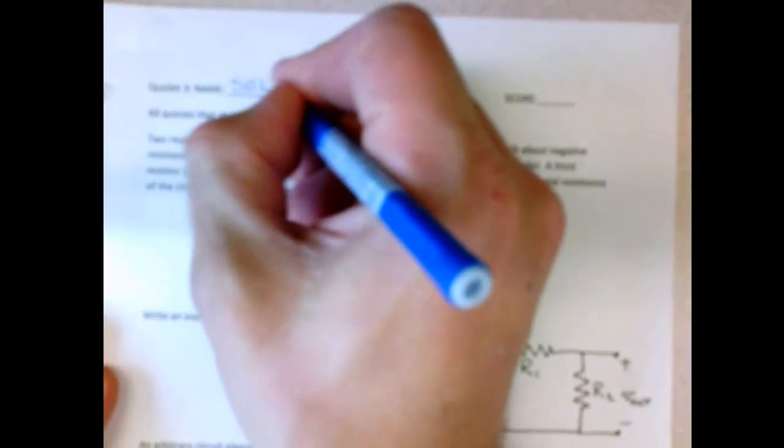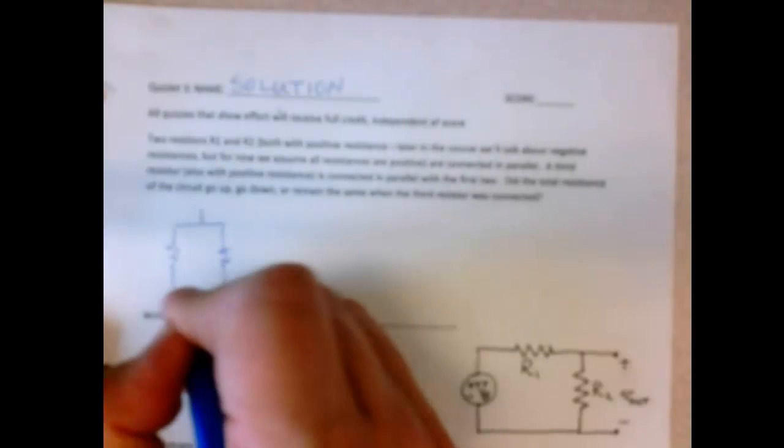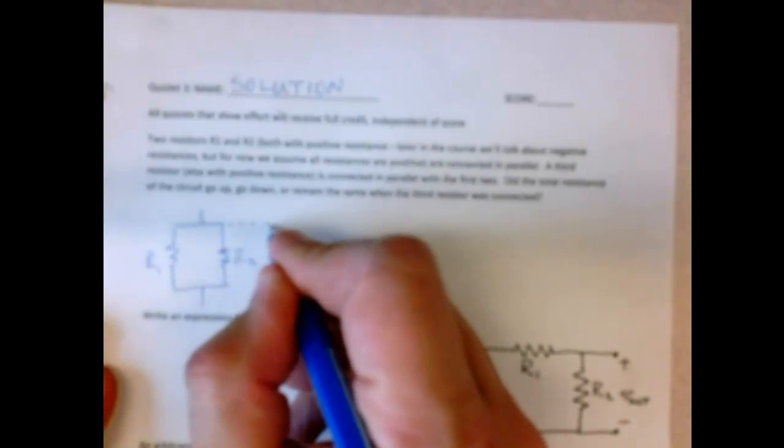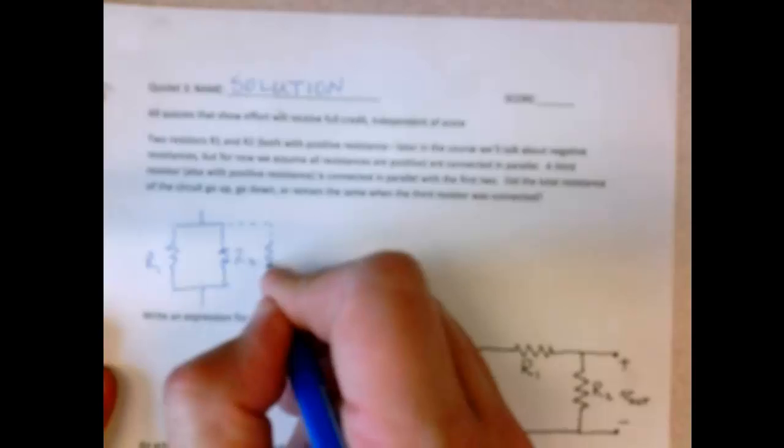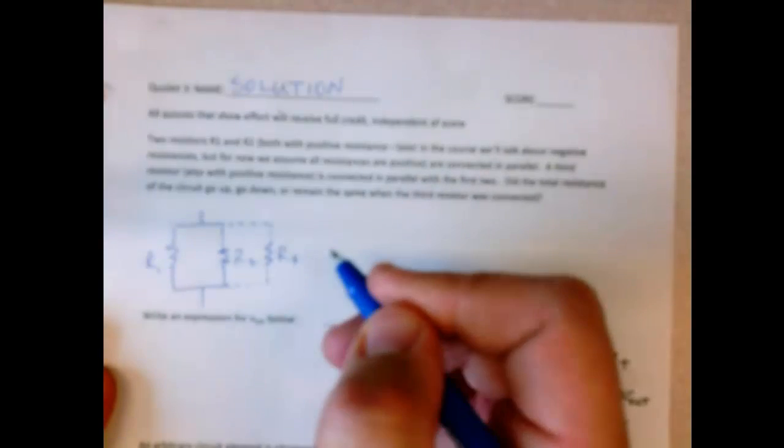Okay, so I want to record the solutions here for today's Quizlet and lecture. So the first question is the two resistors in parallel, and you add a third resistor. So you have this situation, R1, R2, and you add a third resistor. And the question is, does the resistance go up or go down?